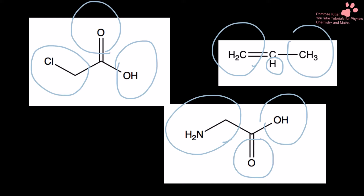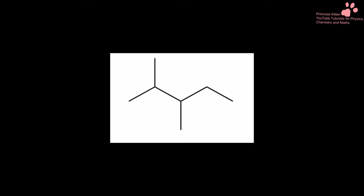Looking at the carbons at the end, this one, this one, this one, and this one are not chiral. This one is not chiral because this group here is the same as this group here. If we look at this one, we've got this group, this group, this group, and we've got hydrogen - so this one here is a chiral carbon. Moving on to this one, we've got this group, this group, and then two hydrogens. So this molecule has only one chiral carbon.